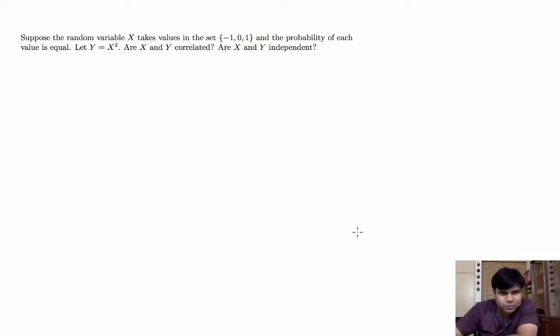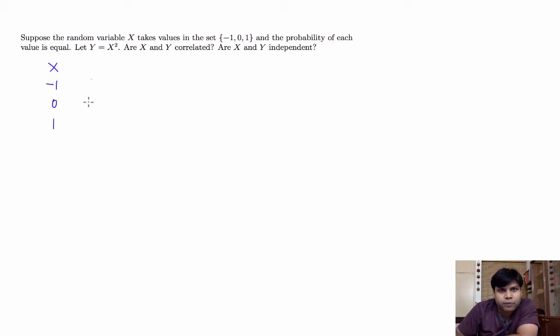Hi, welcome. In this video we'll solve the following problem. We are given that x takes values minus 1, 0, 1 with probability 1 third each.